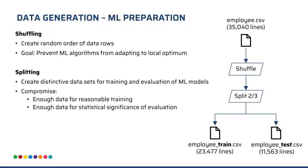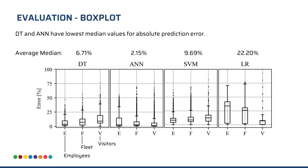In order to train and evaluate the models, we first prepare the CSV files. We shuffle the files to prevent models from training on a local optimum, using shuffling algorithms available in the Linux terminal. We then split the files in a ratio of two-thirds for training and one-third for evaluation. After training, we examine the evaluation files to see how good the prediction was with regards to the expected occupancy values.